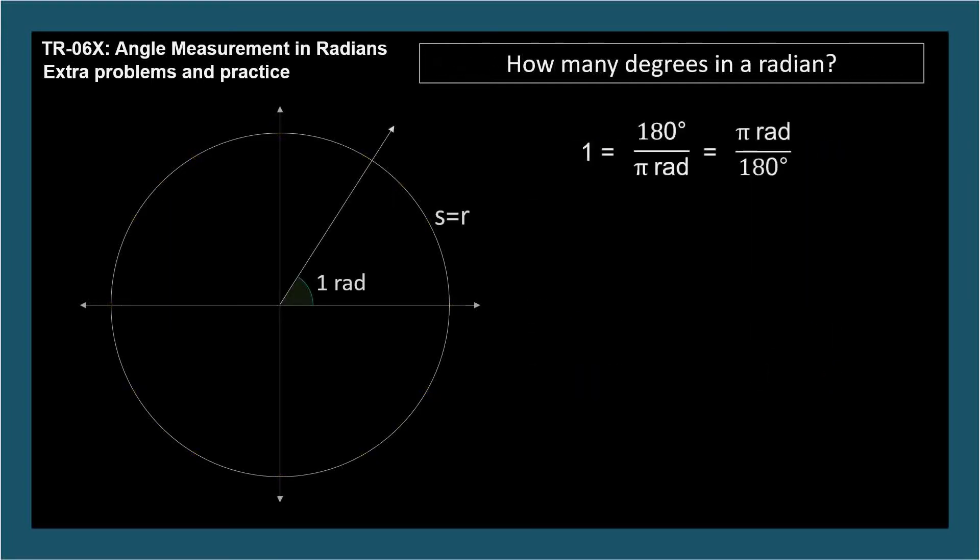How many degrees in a radian? For these conversion problems, we'll multiply what's given by a conversion factor that equals one, whose numerator and denominator have the same measure, but their units are different. Here are the two conversion factors for converting between degrees and radians.